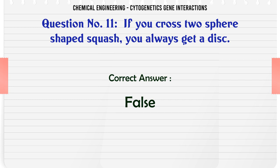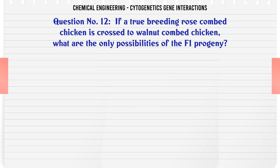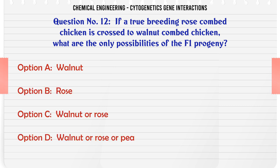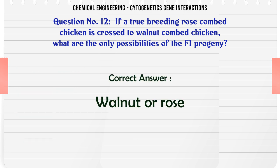If a true breeding rose-combed chicken is crossed to a walnut-combed chicken, what are the only possibilities of the F1 progeny? A. Walnut, B. Rose, C. Walnut or rose, D. Walnut or rose or pea. The correct answer is Walnut or rose.